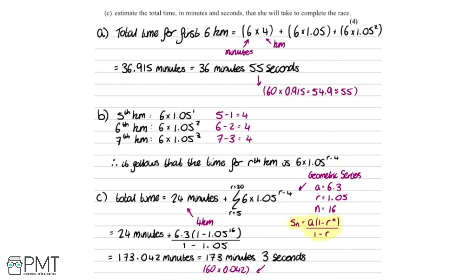So looking at the mark scheme to see where we get the marks. For part A we get one mark for this line here and one mark for the correct answer. For part B we get one mark for all this working, essentially showing the link between the rth kilometer and the index here. And finally, for part C, we get one mark for this line here, another mark for using the correct formula from the formula booklet, another mark for adding it on to the 24 minutes to get the total time, and the fourth and final mark for the correct answer.